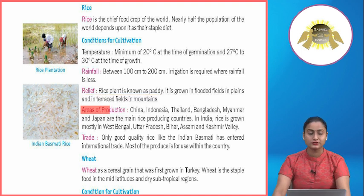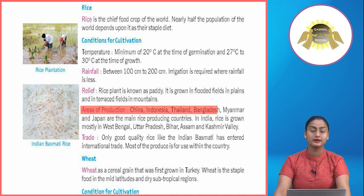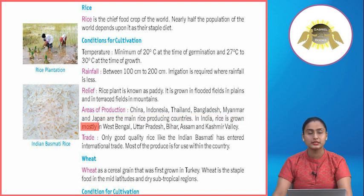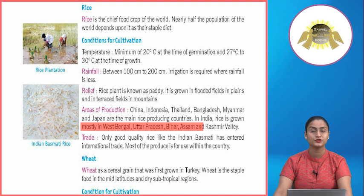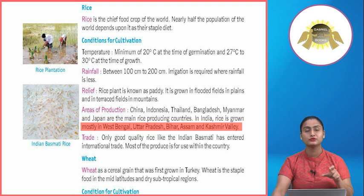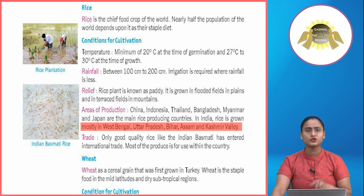Areas of rice production: China, Indonesia, Thailand, Bangladesh, Myanmar and Japan are the main rice-producing countries. In India, rice is grown mostly in West Bengal, Uttar Pradesh, Bihar, Assam and Kashmir Valley.